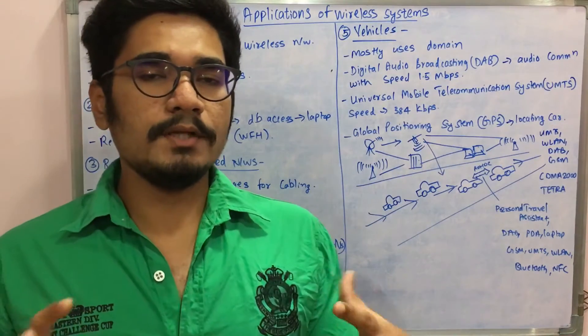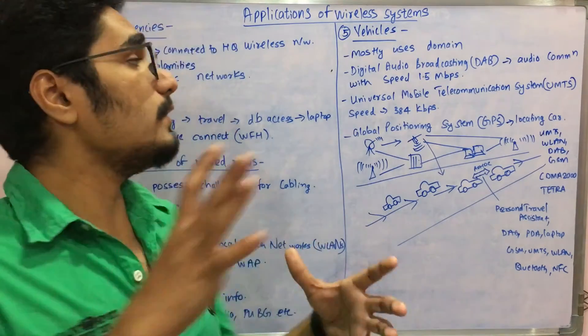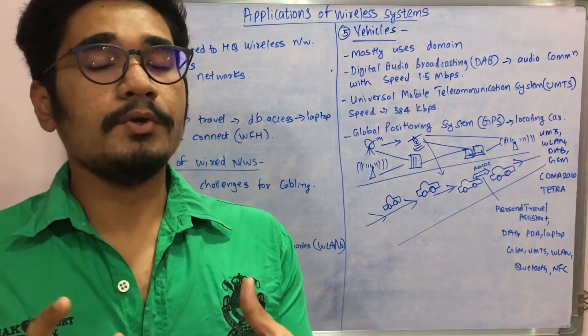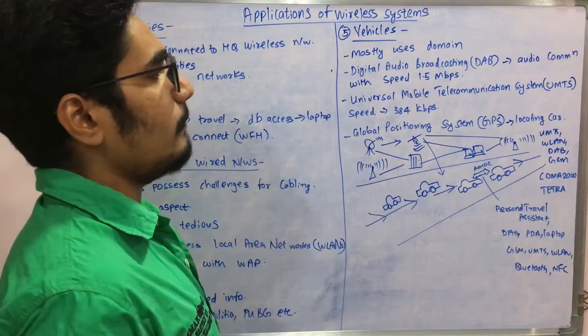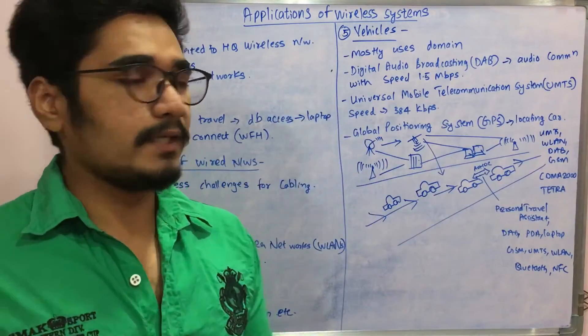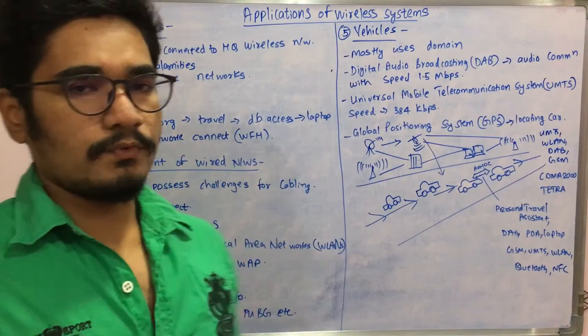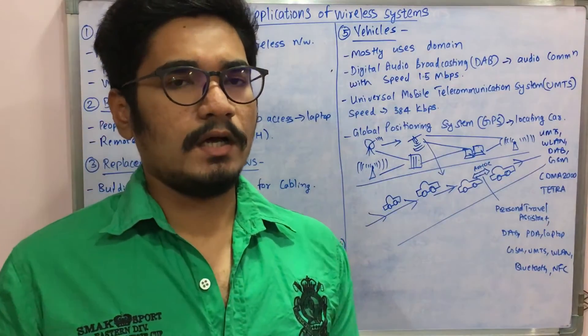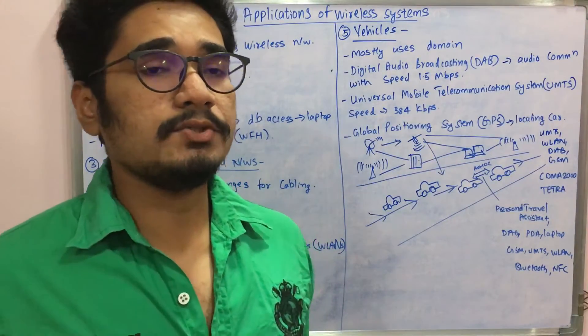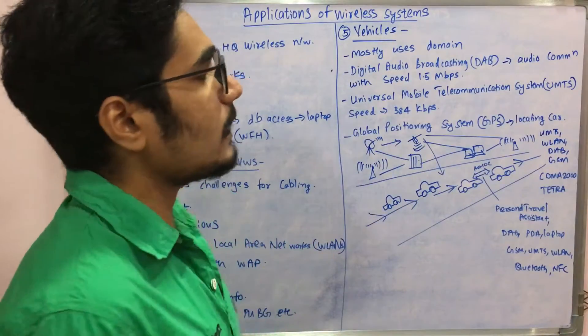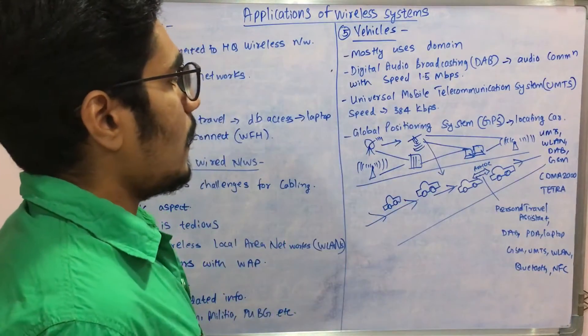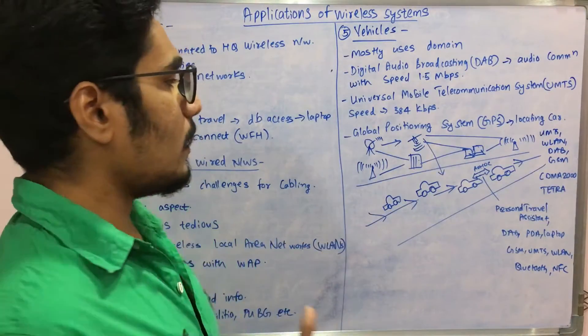The most commonly used domain of wireless systems is vehicles. In vehicles, you have digital audio broadcasting, called DAB, which is audio communication with a speed of up to 1.5 megabytes per second. This is used for communication within long distances. For even longer distances or larger range, you have UMTS—the Universal Mobile Telecommunication Systems—with a speed of 384 kbps.